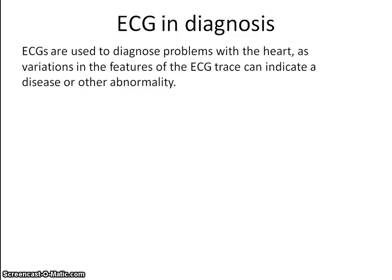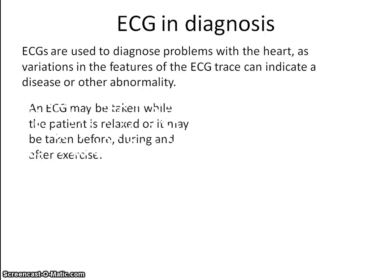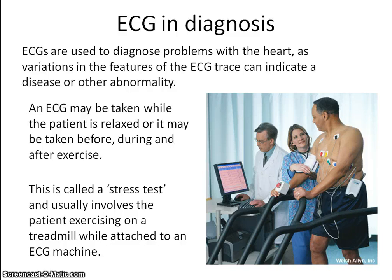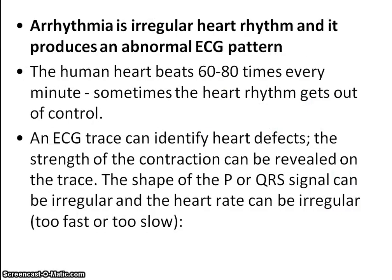The ECG is very useful in the diagnosis of heart problems or other diseases. An ECG trace can indicate arrhythmia — irregular heart rhythms — and aid in the diagnosis of heart problems. The shapes of those signals — the P wave, the QRS complex, and the T wave — if in any way irregular or in the wrong position, can indicate problems.